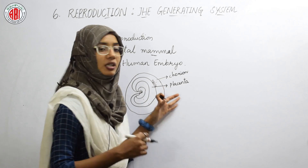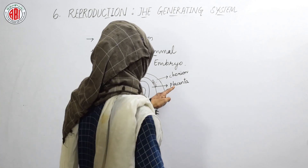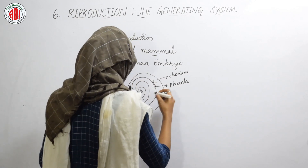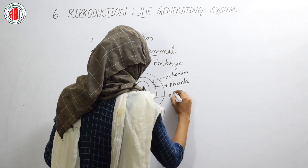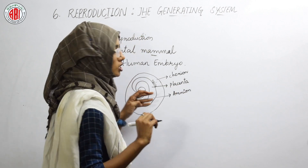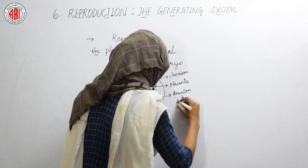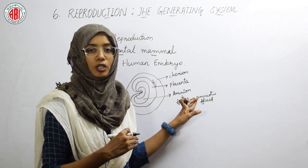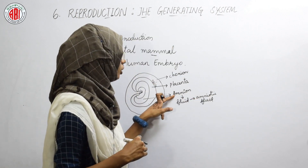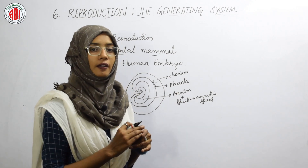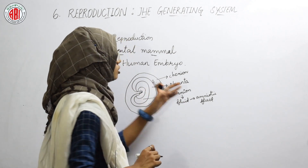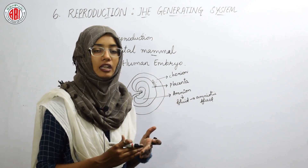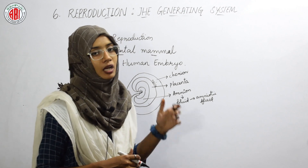The blood of the mother and the embryo do not mix because of the presence of a membrane called the placenta. Another protective layer is called the amnion. The amnion layer contains a fluid called amniotic fluid. Because of the presence of this amniotic fluid within the amnion layer, the embryo is protected against mechanical jerks or injuries. So this amniotic fluid helps in providing protection to the embryo against mechanical injuries and shocks.